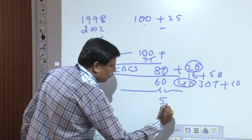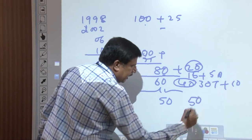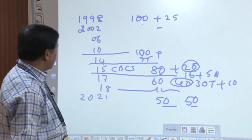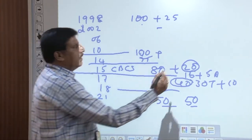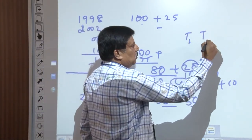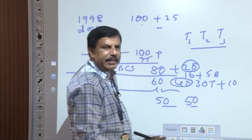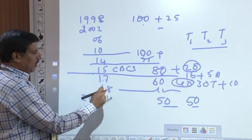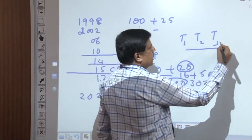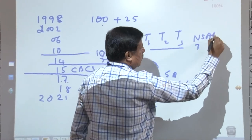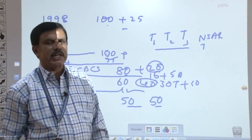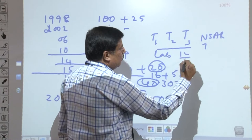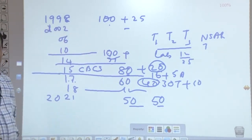In the 2021 scheme, it is 50 marks for theory and 50 marks for internal assessment. Up to 2015, we conducted Test 1, Test 2, and Test 3 and took an average. There was a concept called NSSR — Not Satisfied Sessional Requirement. For lab, the minimum was 12 out of 25, that is 50%, whereas for theory there was no minimum requirement up to 2014.